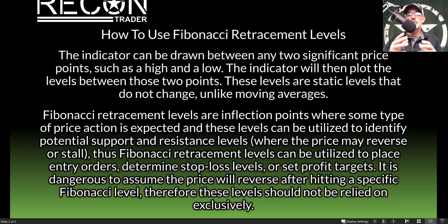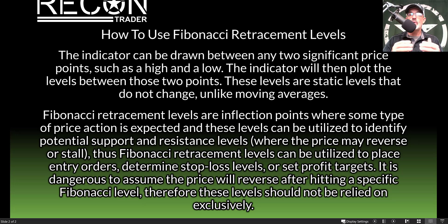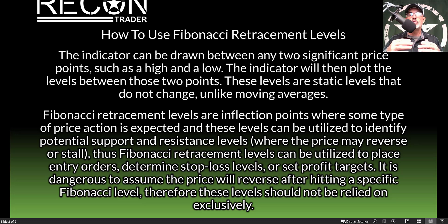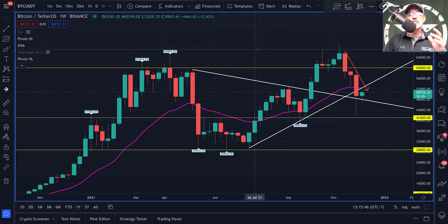It is important to note it can be dangerous to assume the price reversed after hitting a specific Fibonacci level. Therefore, these levels should not be relied on exclusively. For example, you might want to use a moving average to help identify a reversal in the trend, or you might want to use something like RSI to determine if the move is overbought or oversold and perhaps ready to reverse at one of these Fibonacci levels. But we will save all that for another video.